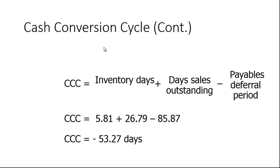To calculate the cash conversion cycle, it's inventory days plus days sales outstanding minus the payables deferral period. Apple has very short inventory days of 5.81, gets paid quickly at 26.79 days, and has a very good payables deferral period of 85.87 days — this is a strong company that negotiates well with suppliers and doesn't pay them for almost 90 days. It turns out the cash conversion cycle is actually negative: -53.27 days. Essentially, suppliers are extending them credit — Apple gets paid well before it has to pay its suppliers, which is a really good position to be in.